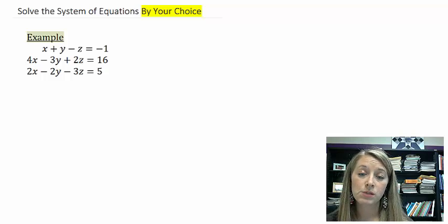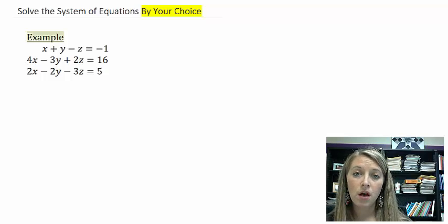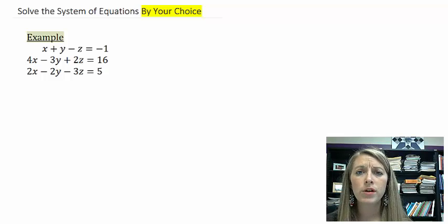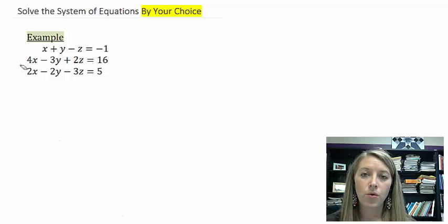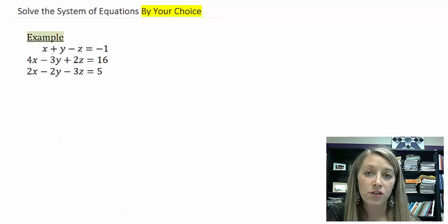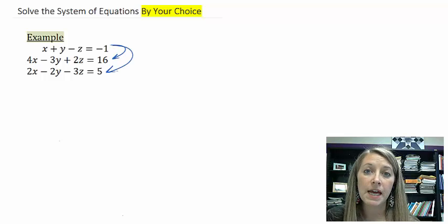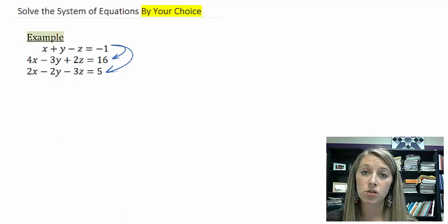We can still do this by substitution or elimination. Unfortunately, we will not be able to check it by using the graphing calculator, but we can always check it by substituting our values back in. Let me run through how each of these methods work. So if you wanted to do this by substitution, pick one variable that you wanted to solve for. I would most likely pick x or y in the first equation because it's the easiest to solve for. And then you would substitute it into the second and third equation. This should reduce it down to a two-by-two where you have two equations with two variables, and you can solve it just like normally.